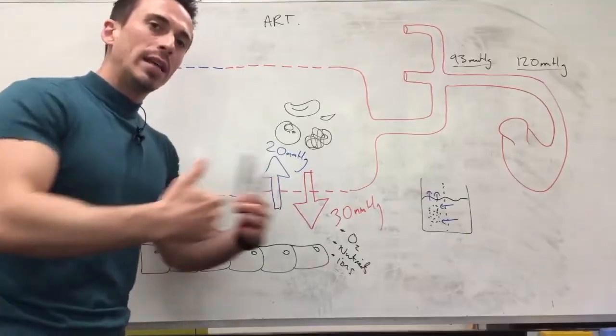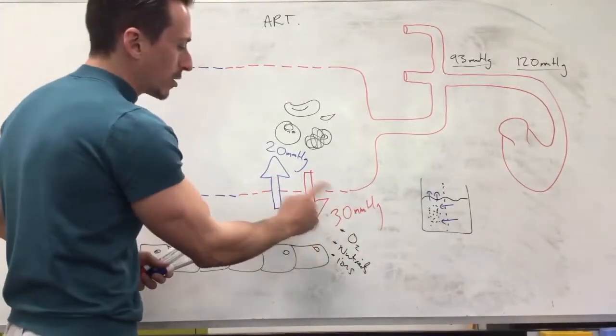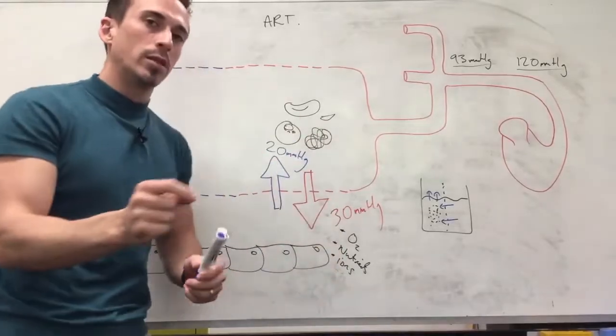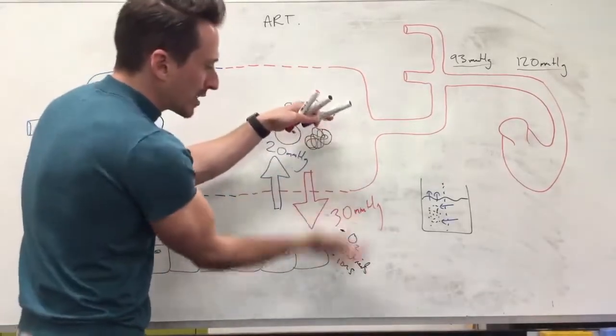So I've got an outward push of 30 and inward pull of 20. Where is the net pull or push? We've got a stronger push out so we have a net push out of 10 millimeters of mercury, which means we have an overall winner here pushing stuff out of the blood vessel.